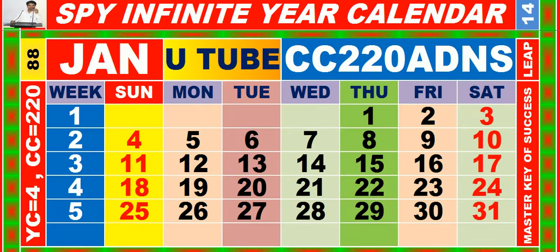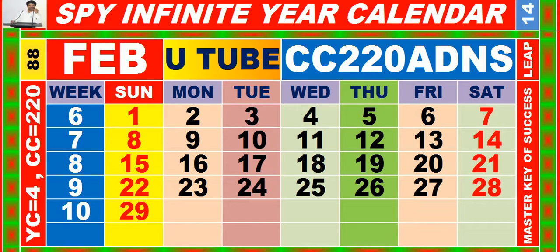Calendar for the month of January, having calendar code equal to 220. You may also search it on YouTube. Calendar for the month of February, having calendar code equal to 220.